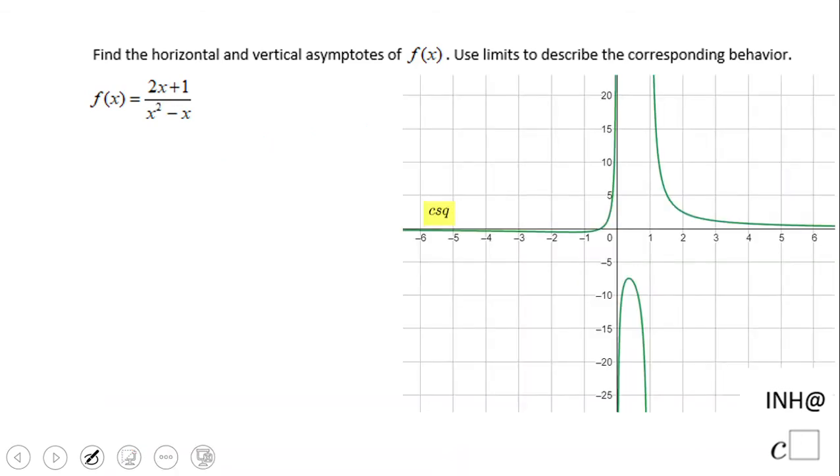By the way, we have here the picture, which allows us to see all those asymptotes. We see x equals zero, x equals one, and also y equals zero. The window goes from negative six to positive six, and from negative 25 to 20. Sometimes we need to adjust the window to see the picture.